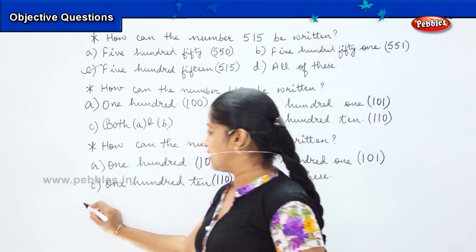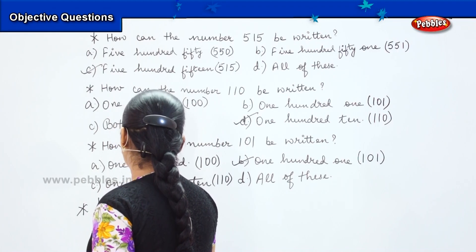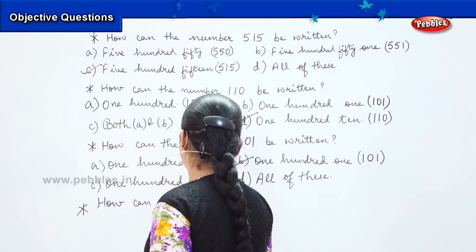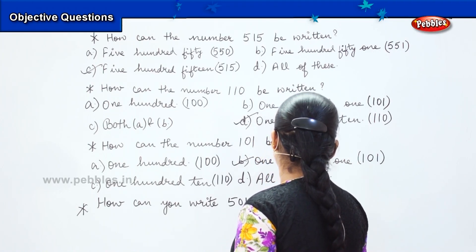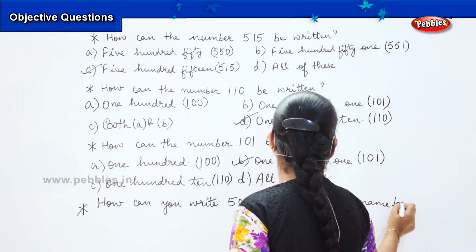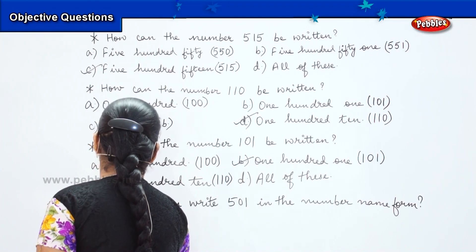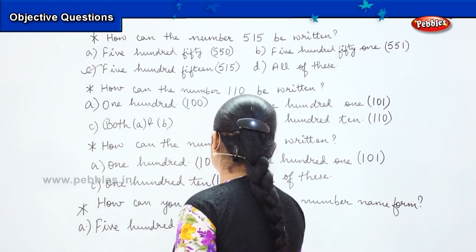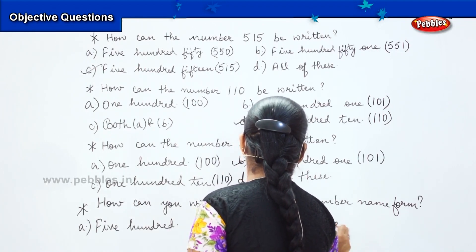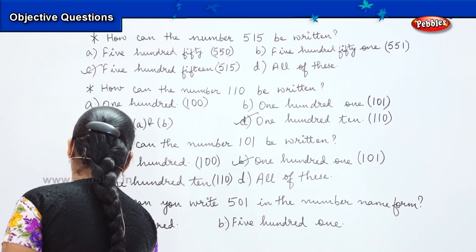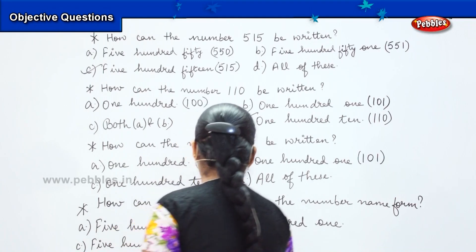Okay children, here is your last question of this pattern. And my question says: how can you write 501 in the number name form? And my options are: first one says 500, 100; my second option says 500, 1; my third option says 500, 10; and my fourth option says none of these.